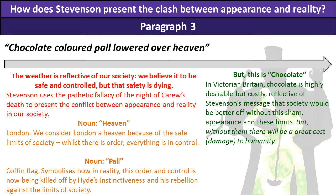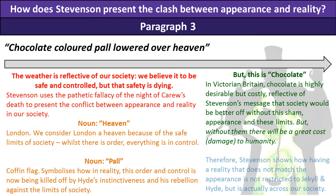The word 'chocolate' is particularly clever. In Victorian Britain, chocolate was highly desirable but costly, reflecting Stevenson's message that we would be better off without this sham appearance, better off without these limits and restrictions — we could set ourselves free and enjoy ourselves far more. However, just as chocolate is damaging to our bodies, abandoning these limits creates great damage to our society. Stevenson therefore shows that having a reality that does not match the appearance is not restricted to Jekyll and Hyde but is present across society as a whole.